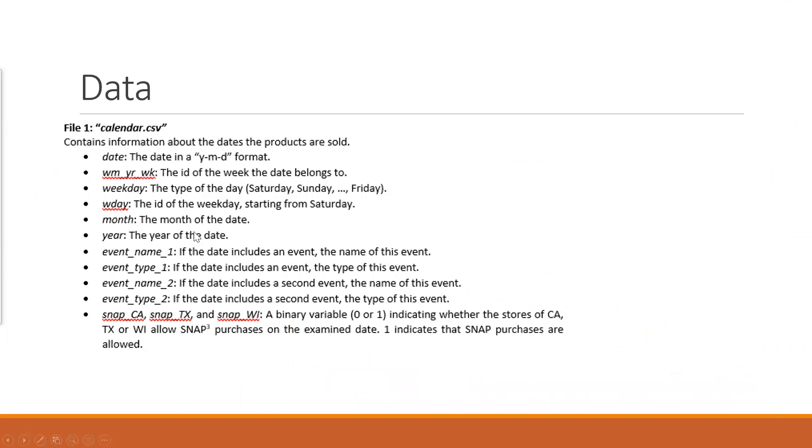The data they have is first, they have multiple CSVs. The first CSV is about the dates the products are sold. The week, whether it's weekdays, and the idea of the day starting from Saturday, the month, the year, and whether the date includes an event and what's the name and type of the event. Many of the stores are in CA, Texas, or WI. This is a binary variable indicating whether the stores allow SNAP purchases on the exam date.